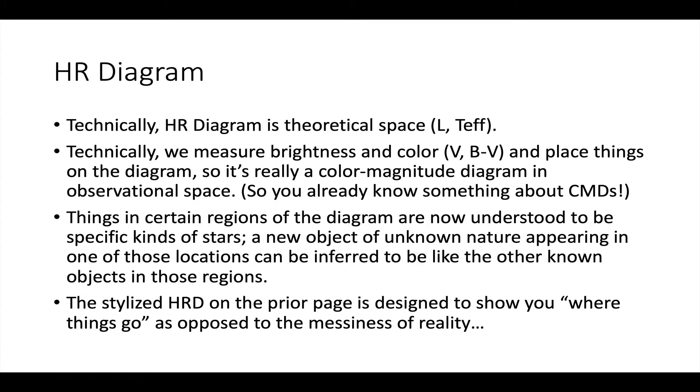Technically an HR diagram is the theoretical space, in other words the luminosity and the effective temperature. And what we're actually measuring though is brightness and color, say V and B minus V. So an HR diagram is really a color-magnitude diagram when you observe it. So even before you realized what was going on, you already know something about color-magnitude diagrams.